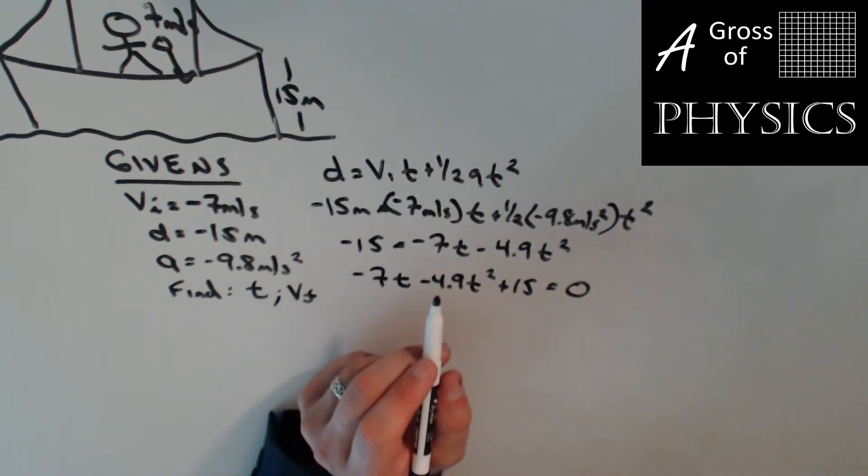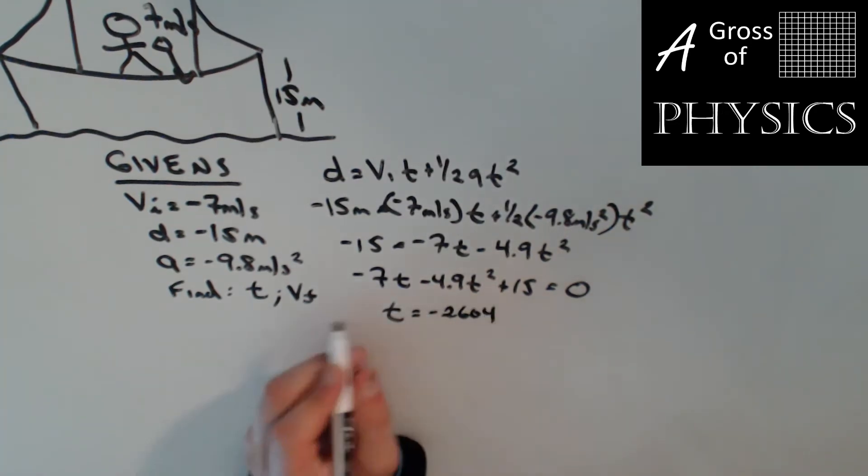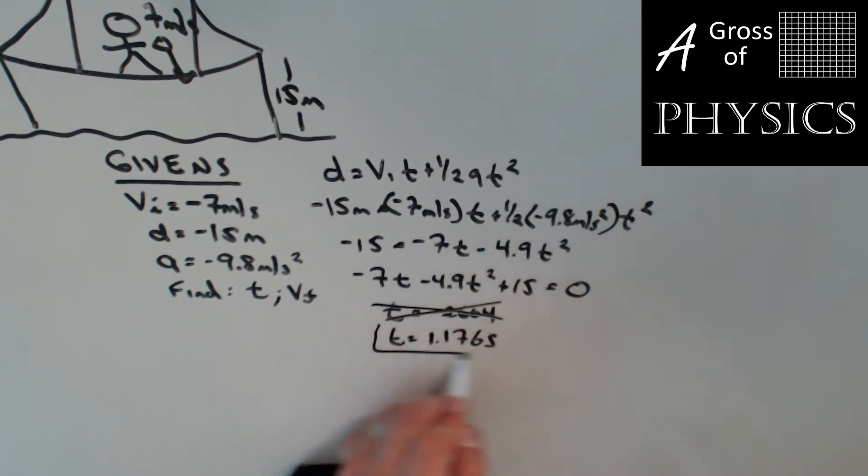Now I'm going to use my quadratic solver. t equals negative 2.604 or t equals 1.176 seconds. I'll eliminate the negative and I'll be left with the positive root.